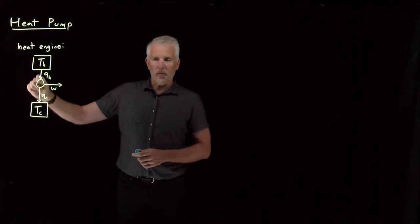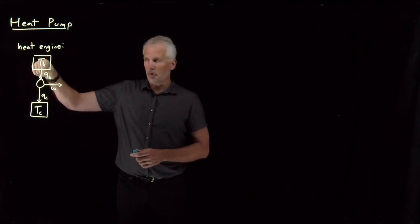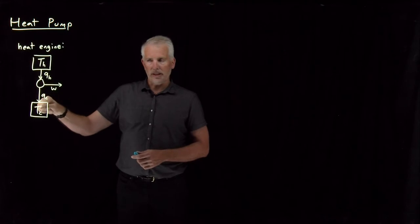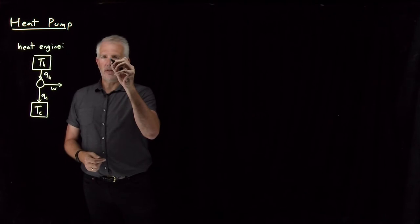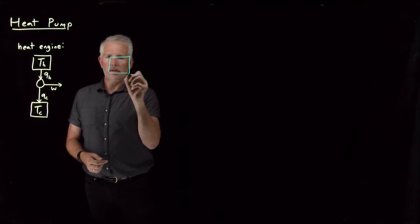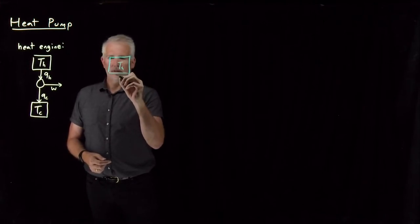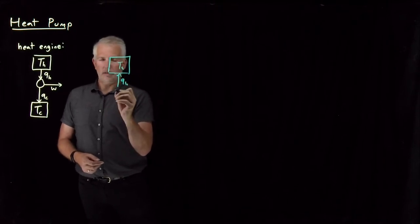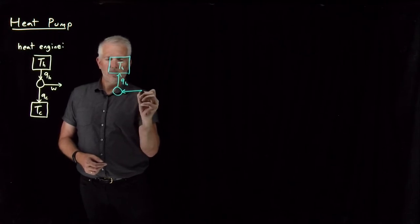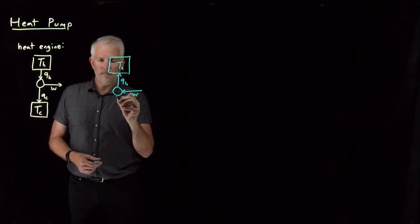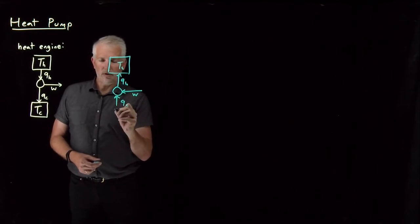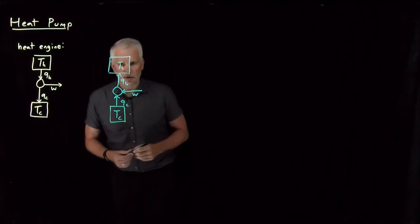The arrows indicate whether energy is flowing into the system — we're absorbing heat — or whether it's flowing out of the system — we're rejecting heat, or we're doing work. So if I redraw this figure just reversing each of these arrows, the hot heat process is flowing from the system to the surroundings, the work is being done on the system rather than by the system, and at the cold temperature, heat is flowing out of the surroundings into the system.